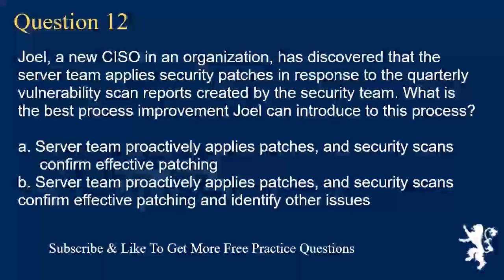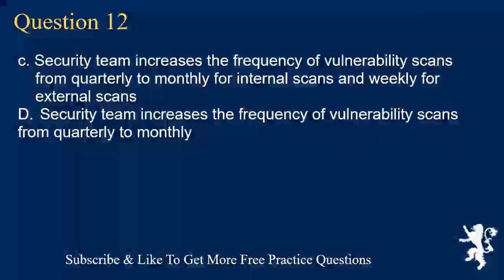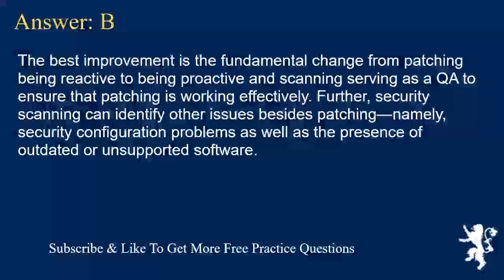Question 12. Joel, a new CISO in an organization, has discovered that the server team applies security patches in response to the quarterly vulnerability scan reports created by the security team. What is the best process improvement Joel can introduce? A. Server team proactively applies patches, and security scans confirm effective patching. B. Server team proactively applies patches, and security scans confirm effective patching and identify other issues. C. Security team increases the frequency of vulnerability scans from quarterly to monthly for internal scans and weekly for external scans. D. Security team increases the frequency of vulnerability scans from quarterly to monthly. Answer B. The best improvement is the fundamental change from patching being reactive to being proactive, and scanning serving as QA to ensure patching is working effectively. Security scanning can also identify other issues besides patching, namely security configuration problems and the presence of outdated or unsupported software.